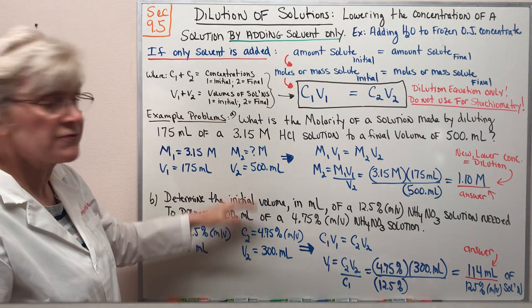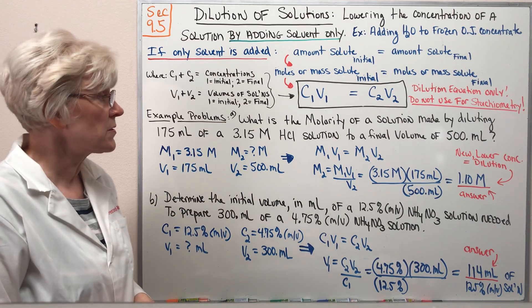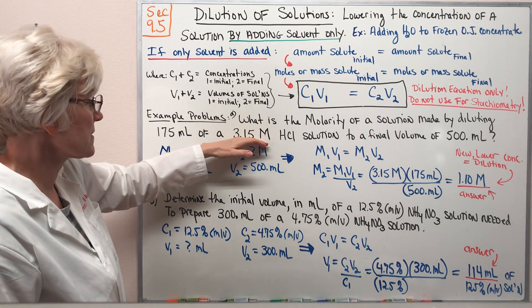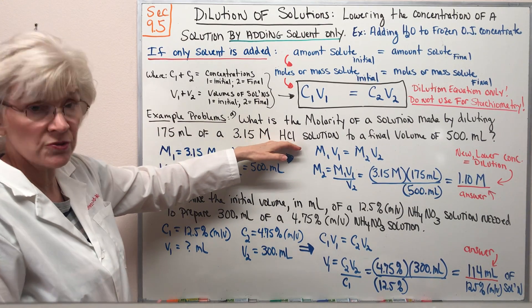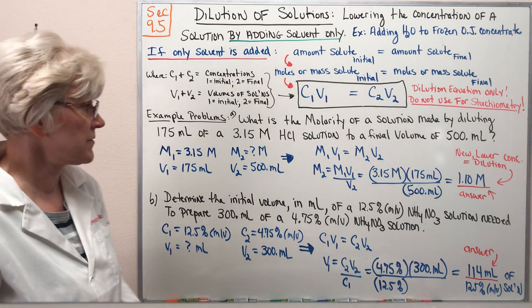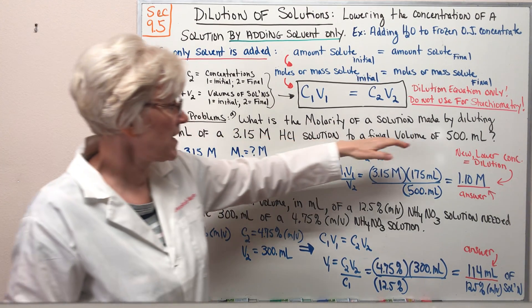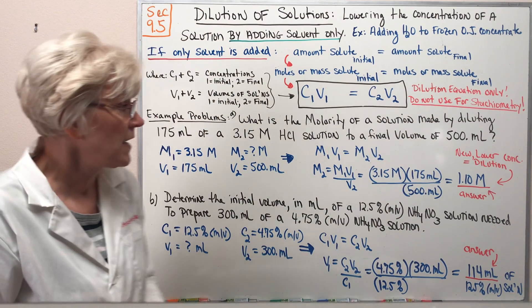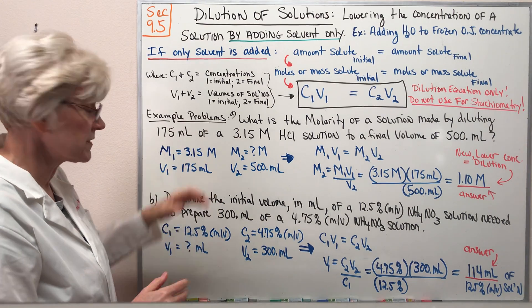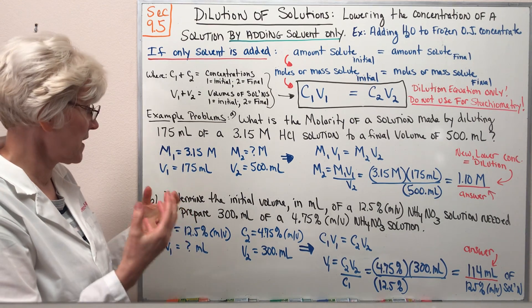Let's take a look at two different types of dilution calculations. The first: what is the molarity of a solution made by diluting 175 mL of a 3.15 M HCl solution to a final volume of 500 mL? In other words, adding water to our initial solution until we have a final volume of 500 mL. There is a lot of data in this problem. It's always helpful to label data when a problem has a large number of data that has to be handled correctly.